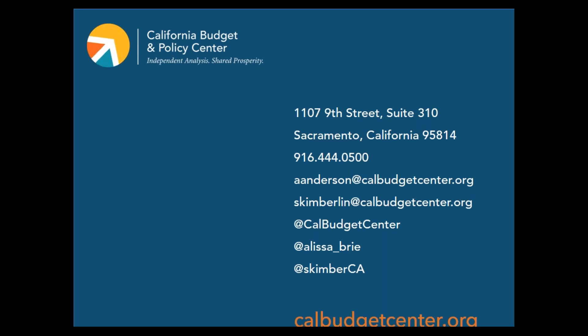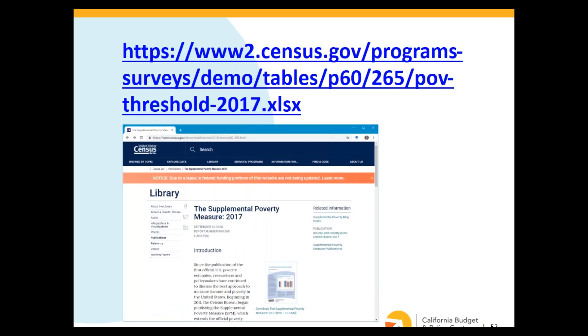Another question: where can you find supplemental poverty measure data for all states, and California poverty measure data for all counties? The supplemental poverty measure data is available on the Census Bureau website — the most recent SPM report shows thresholds for all areas in the United States, and the report includes some state-level data. For the California poverty measure, reports are available on the websites of both the Public Policy Institute of California and the Stanford Center on Poverty and Inequality.